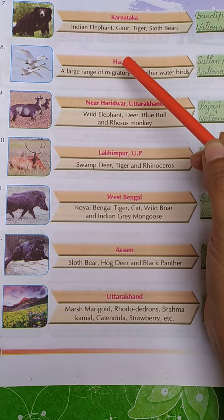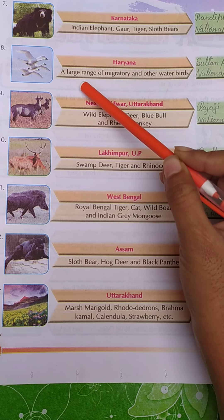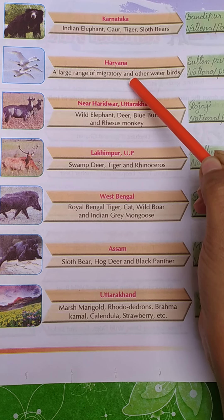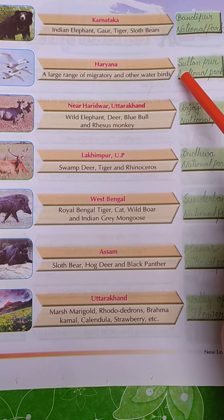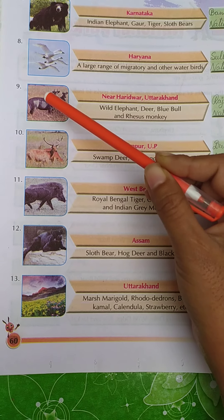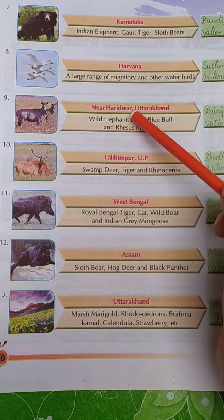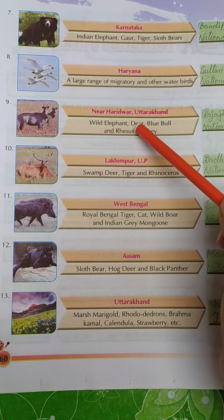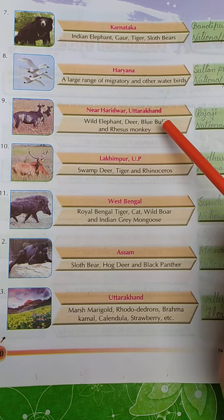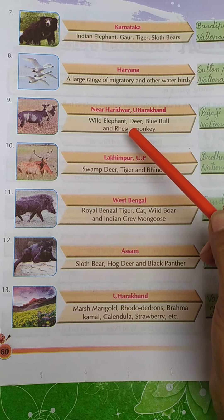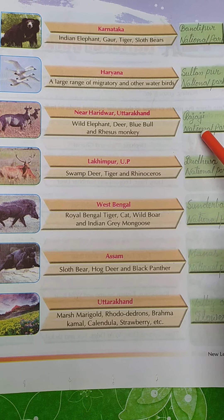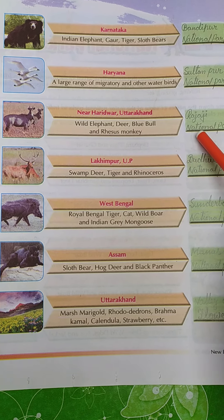Number eight. State: Haryana. Animals are a large range of migratory and other water birds. The name of this national park is Sultanpur National Park. Number nine: near Haridwar, Uttarakhand. Animals are wild elephant, deer, blue bull, and rhesus monkey. The name of this national park is Rajaji National Park.